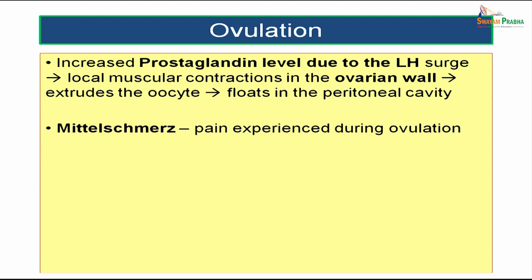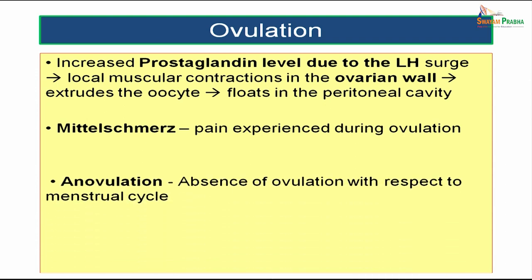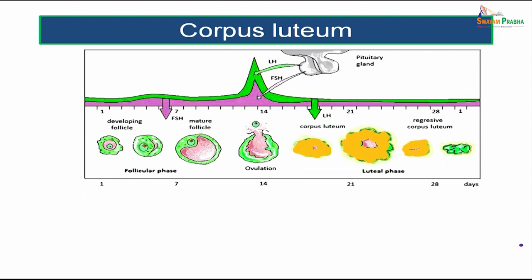Sometimes pain is experienced during ovulation, known as mittelschmerz. The increased prostaglandin level due to the LH surge results in local muscular contractions of the ovarian wall, which help extrude the oocyte. If there is no ovulation relative to the menstrual cycle, that condition is known as anovulation.